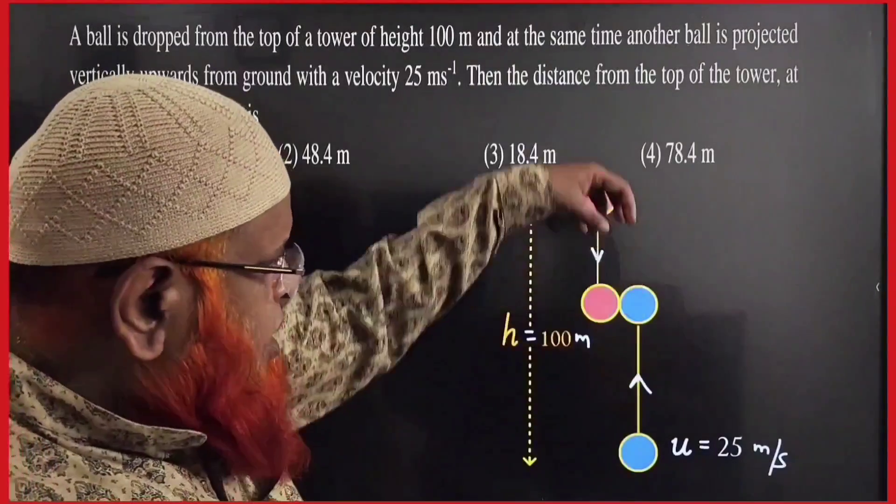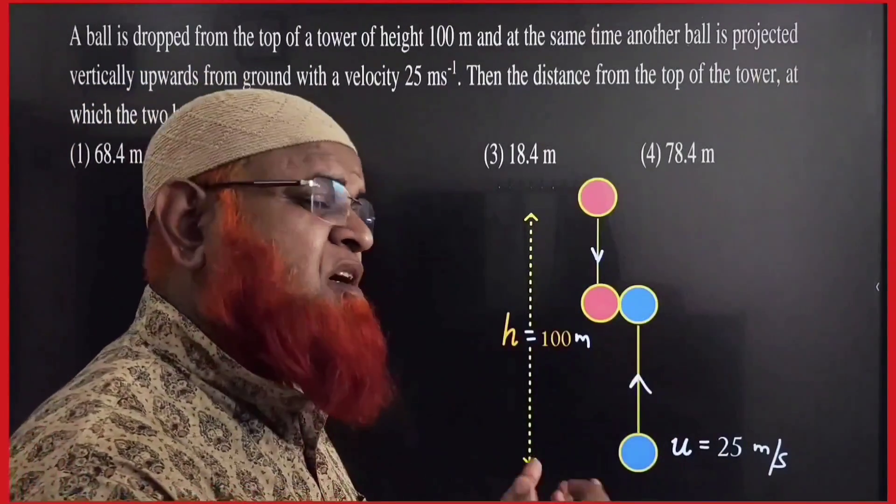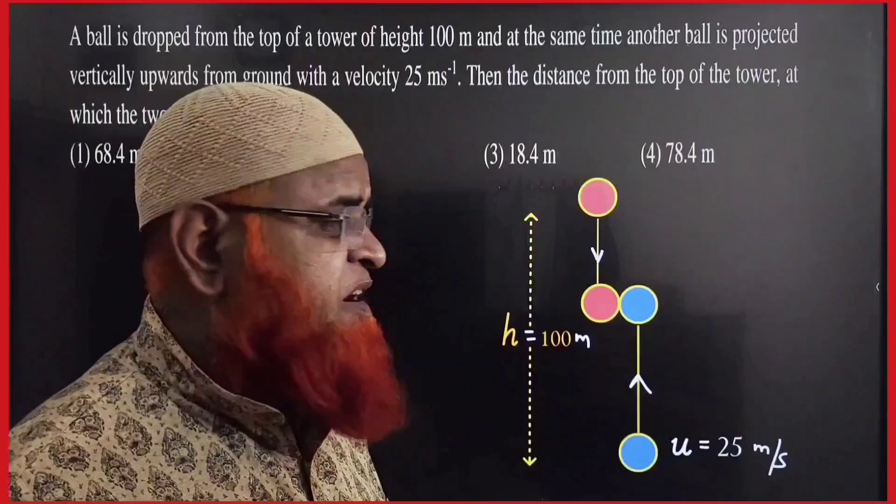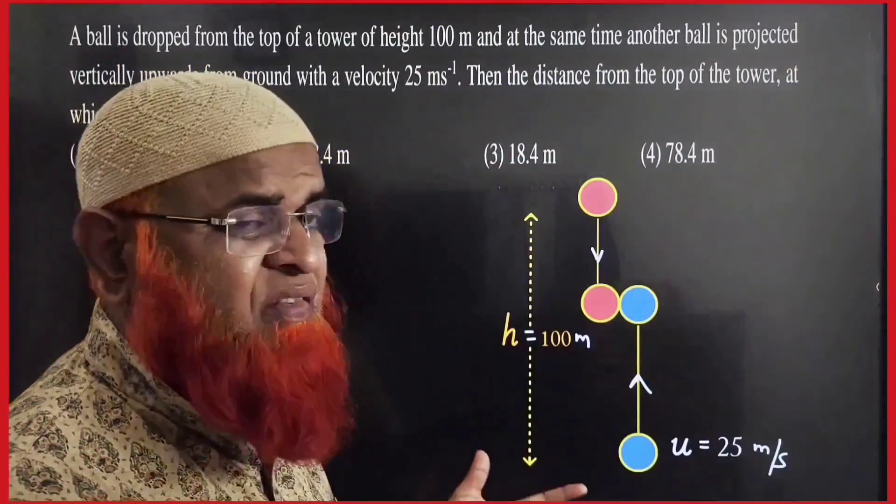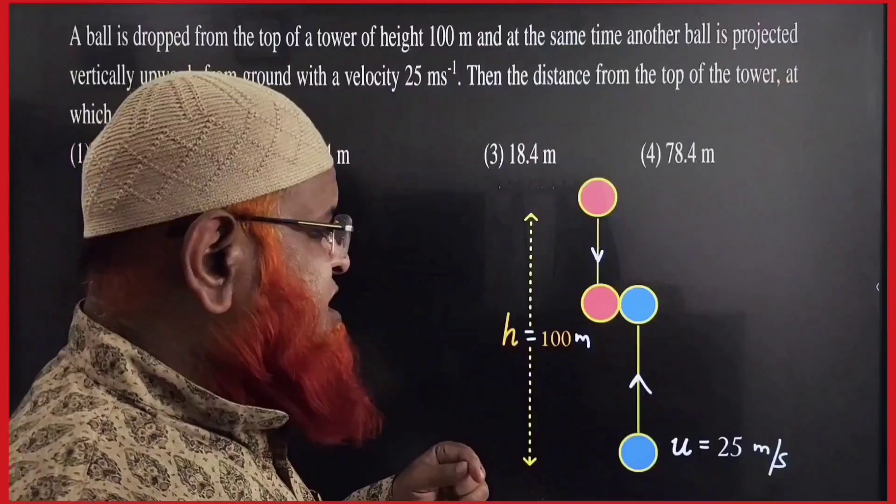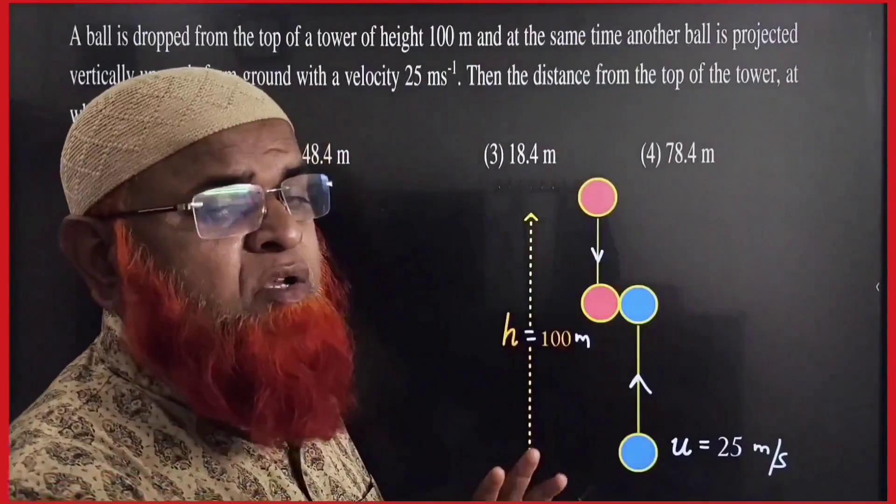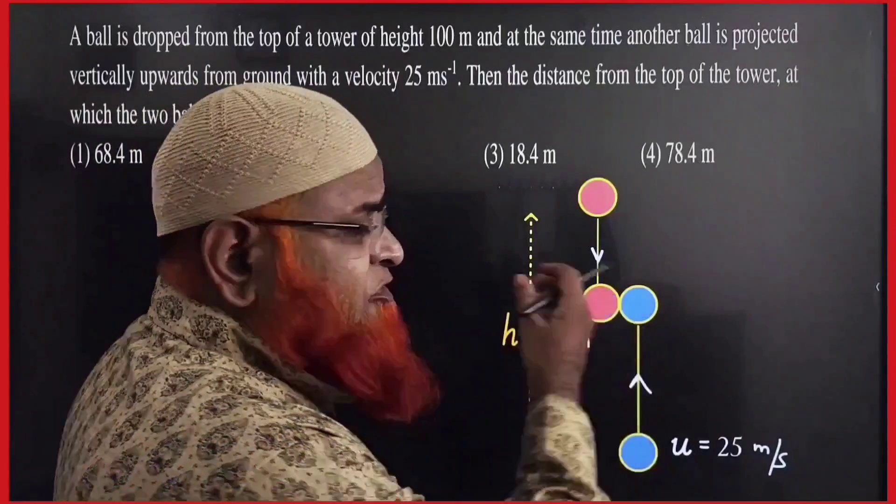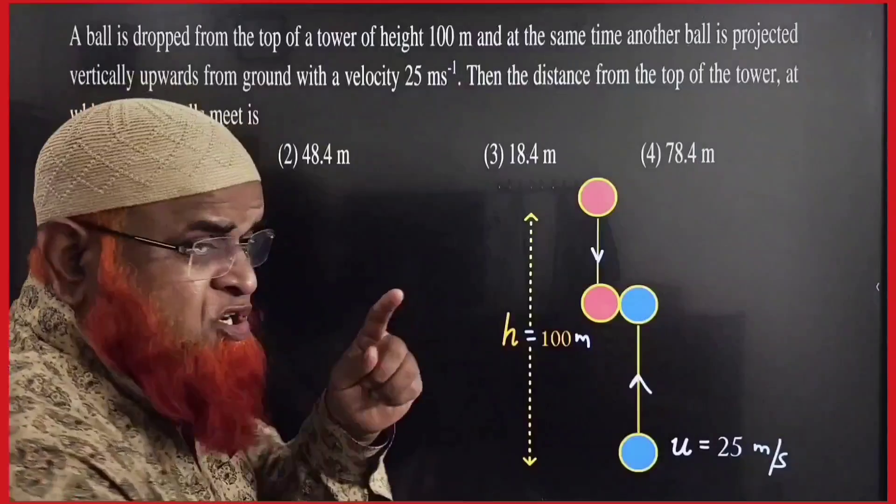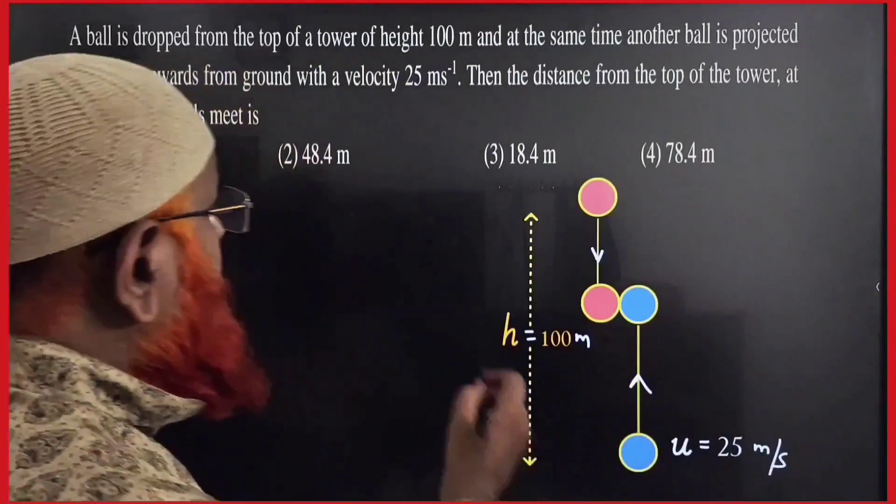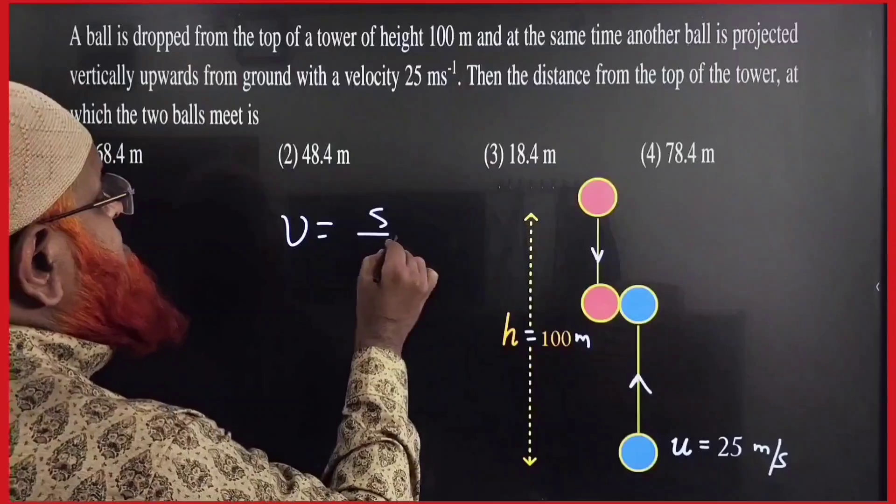Dear friends, one ball is dropped from certain height. One ball is projected upwards from the ground with a speed of 25 meters per second. And the total height from top to bottom is taken as 100 meters. He is asking us to find out when and where the balls will meet from the top. So, for that, first of all, you have to find out when they are going to meet. You have to find out the time first. For that, the simple and shortcut formula I am going to teach you.